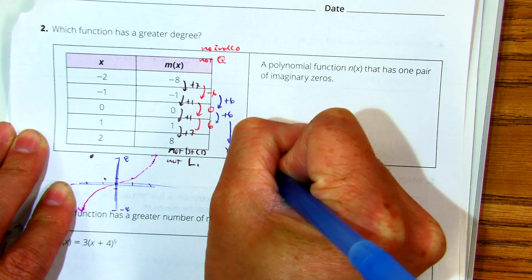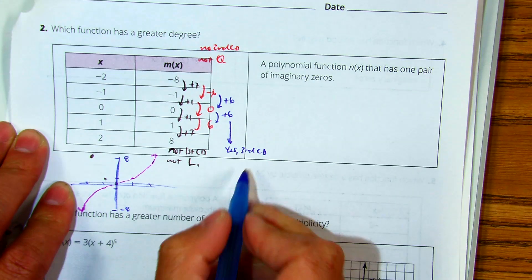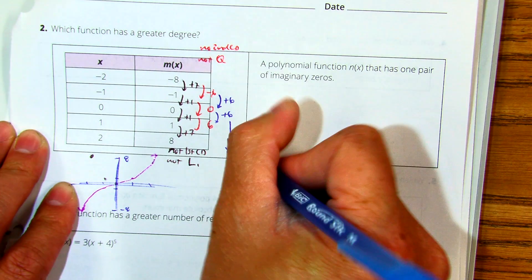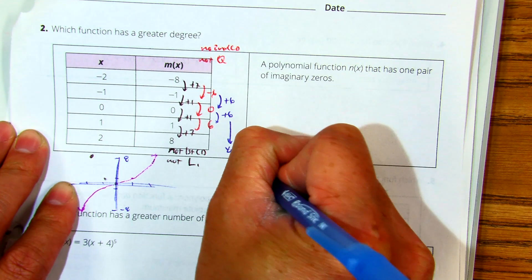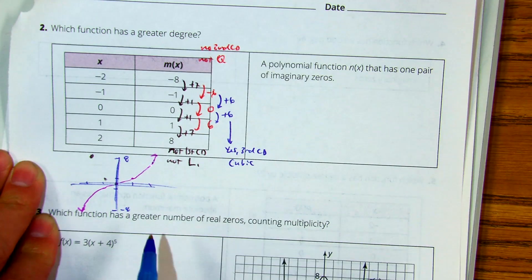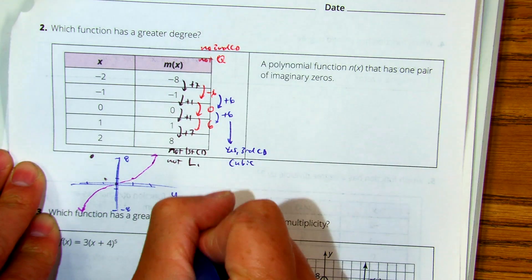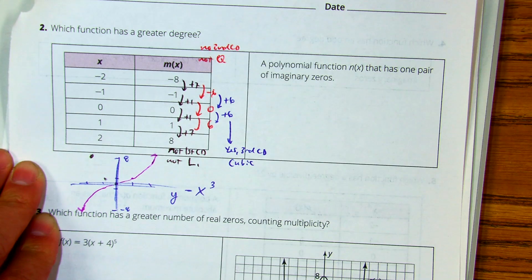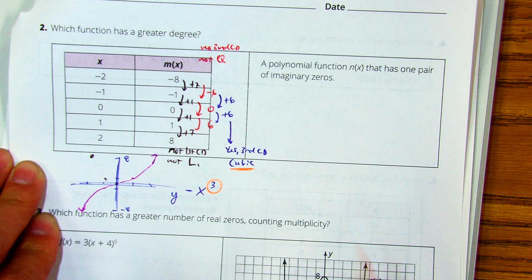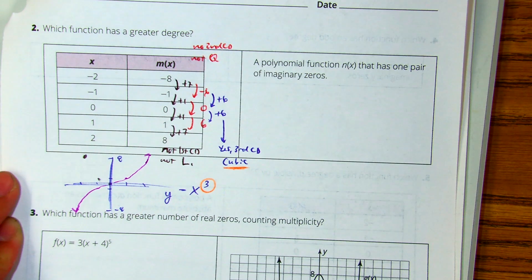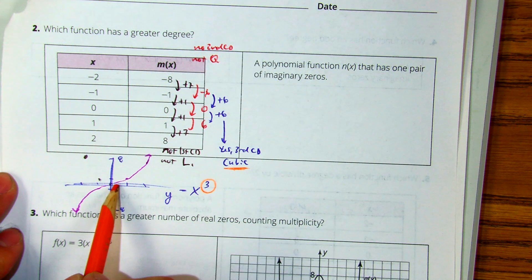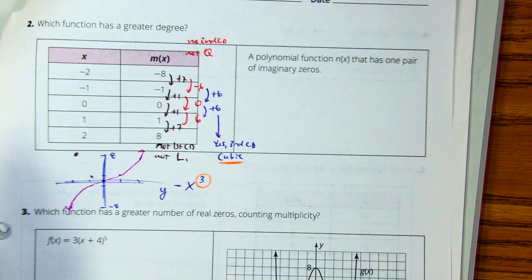a third common difference which we've never talked about before. This verifies to us that this is something to a third power which is called a cubic. So this represents y to the x to the third power. That's what cubic is. It's to the third power. So graphing it gives us a visual and doing the common differences kind of verifies that.